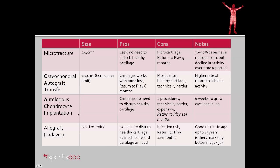ACI, or autologous chondrocyte implantation, has no size restrictions. An advantage is that healthy cartilage is implanted into the defect, and there's no need to disturb healthy cartilage to perform it. The downside is that it requires two procedures, it's technically harder, it's very expensive, and return to play takes over 12 months. It takes six weeks for the cartilage to grow in the lab, and it can be put on hold by freezing for up to six months — but that's about the limit of how long we can keep it.